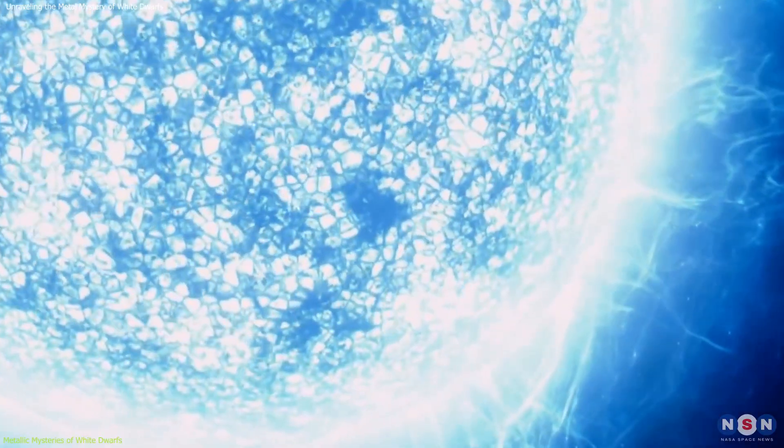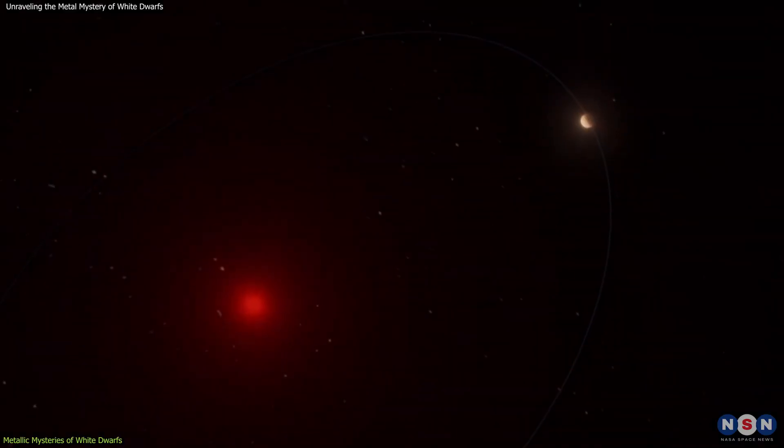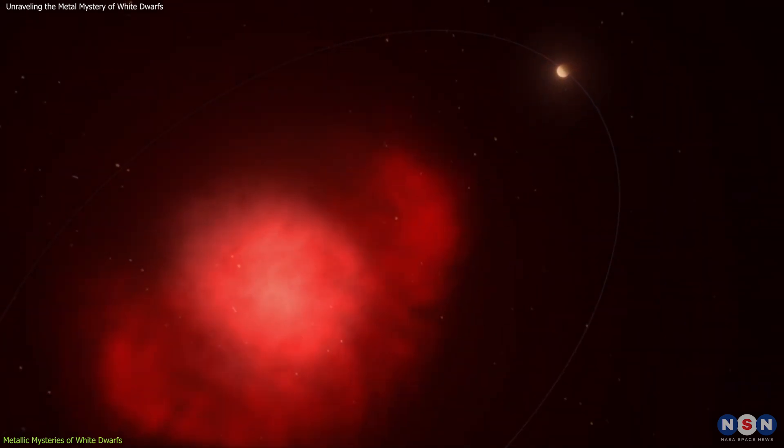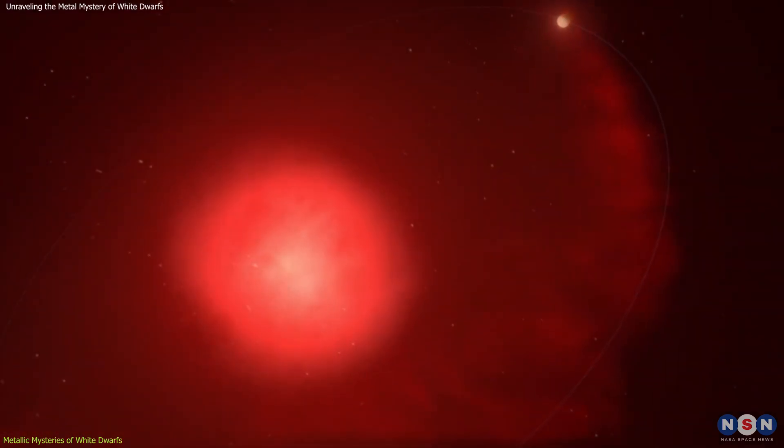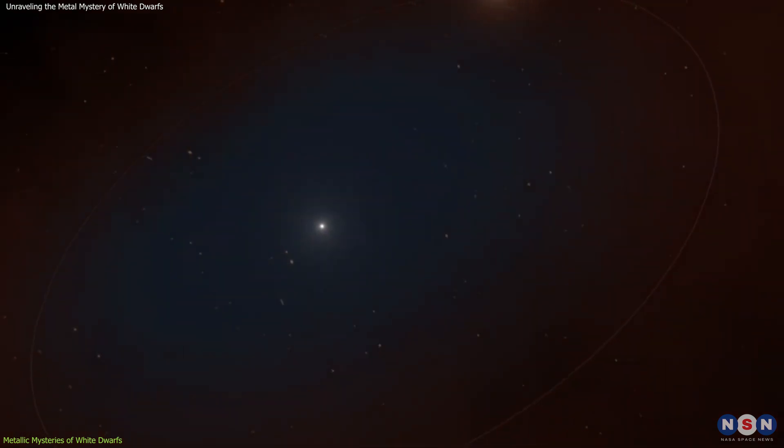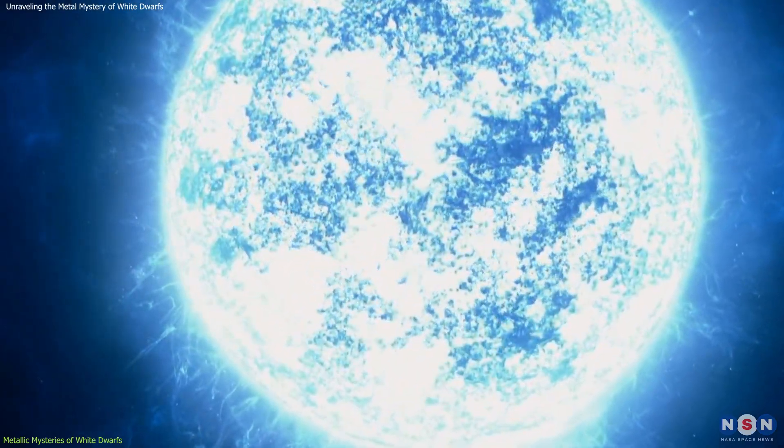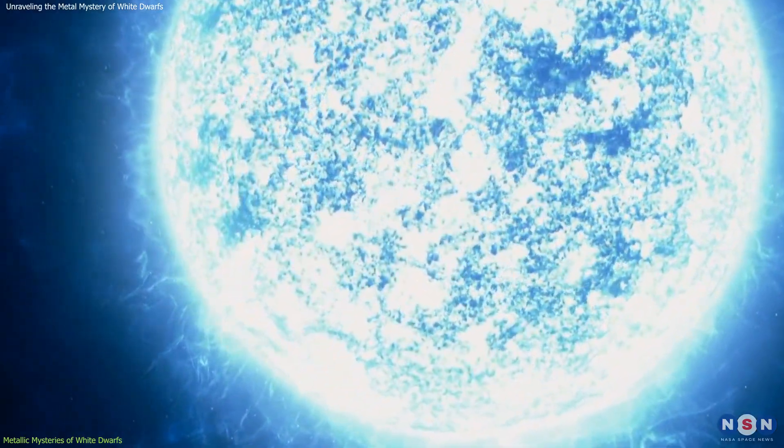The presence of these metals on the surface may be due to the turbulent conditions when a star transforms into a white dwarf. As it exhausts its nuclear fuel and sheds its outer layers, this process might disrupt the normal distribution of elements, allowing some metals to remain on the surface rather than sinking.